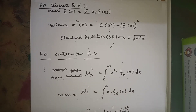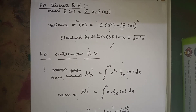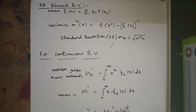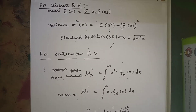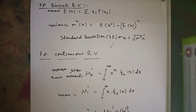Hello everyone, today I am going to explain a few problems on mathematical expectation, moments, and variance for a discrete random variable. In the case of a discrete random variable, x is discrete when it assumes only a countably finite number of values. In the case of a continuous random variable, x takes values between certain limits.